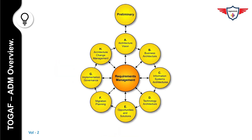Now let's focus on the TOGAF ADM Cycle Flow Diagram. The term ADM stands for Architecture Development Method. The TOGAF ADM is the result of continuous contributions from a large number of architecture practitioners. It describes a method for developing and managing the life cycle of an enterprise architecture and forms the core of TOGAF. It integrates elements of TOGAF as well as other available architectural assets to meet the business and IT needs of an organization.